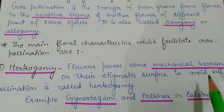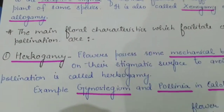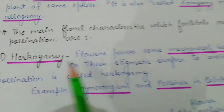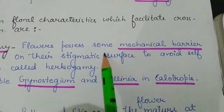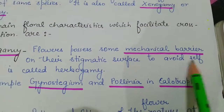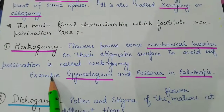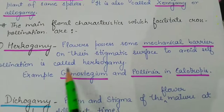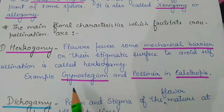There are certain main floral characters which facilitate cross pollination. The first character is herkogamy. In herkogamy, the flowers possess some mechanical barrier on their stigmatic surface — which is the female part: stigma, style, ovary — a mechanical barrier to avoid self-pollination. Example: gynostegium and pollinia in Calotropis.